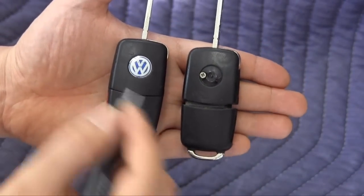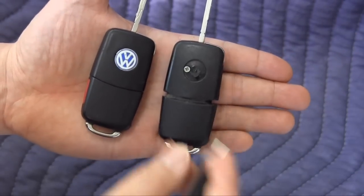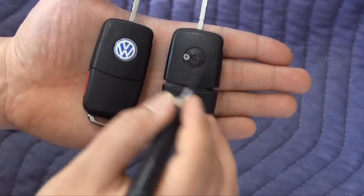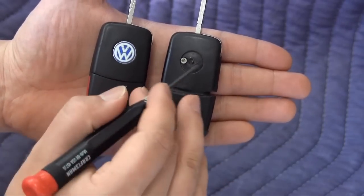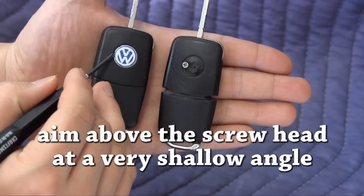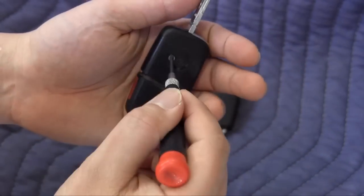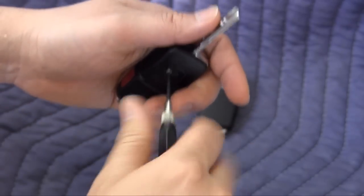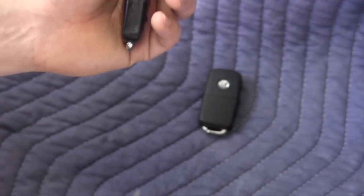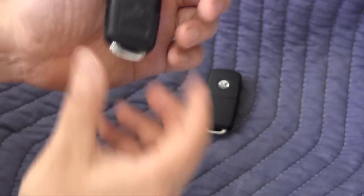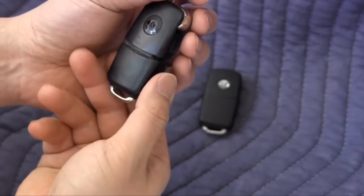If you have this style of key, first you have to pop the Volkswagen badge off. I've already prepared a key. This screw is just left to center and there's a small gap where you can insert a pry. Now, once you remove the badge, undo the screw that's holding the two halves together, then insert a pry here and this key splits open just like that.